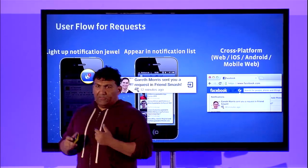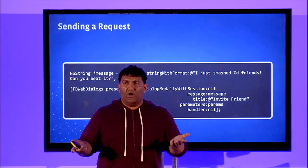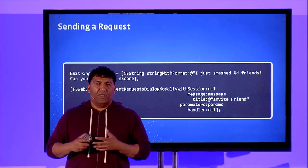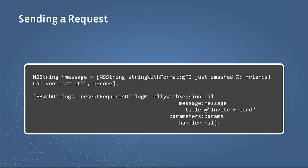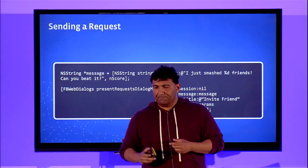They receive a push notification via the Facebook app, engage with it, and see the notification inside the notification tray — it lights up the notification jewel, and they can see that they've been sent a request to join a game. This notification shows up across all platforms — web, iOS, Android — enabling users to recruit one another regardless of what platform they're on. It's a powerful mechanism for cross-platform games.